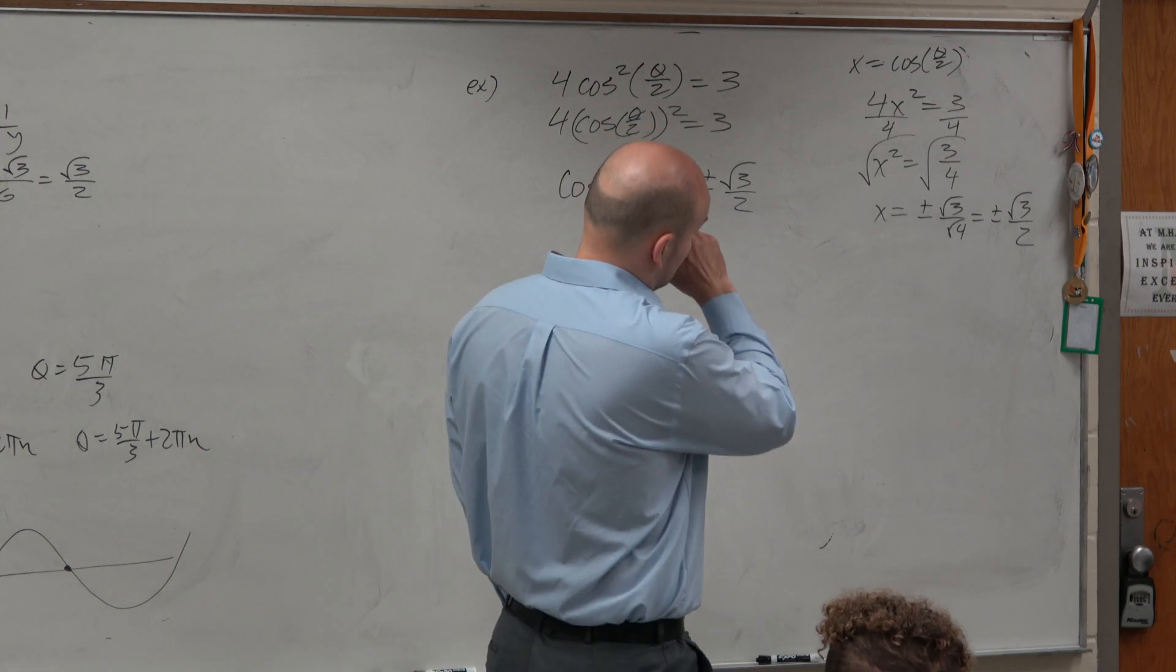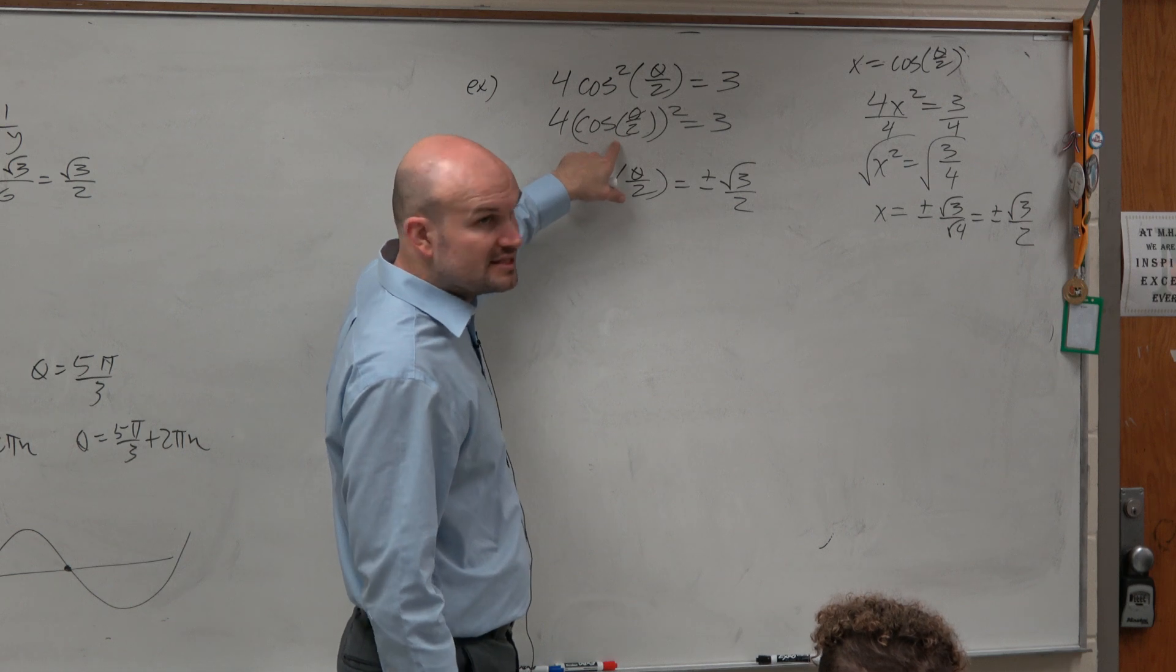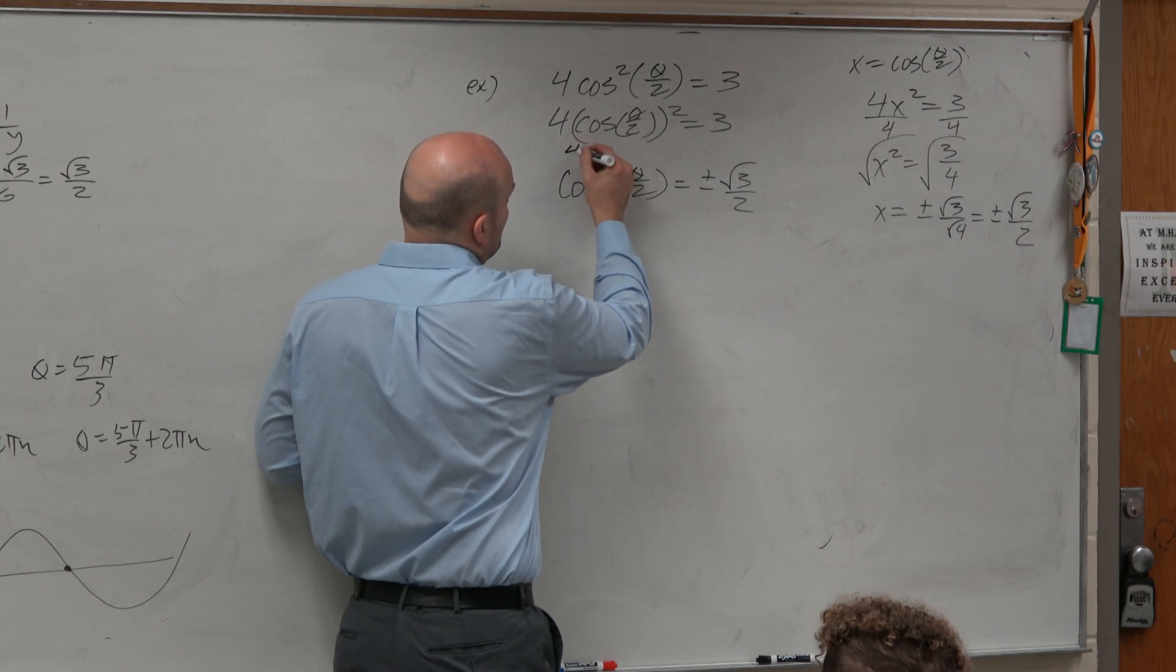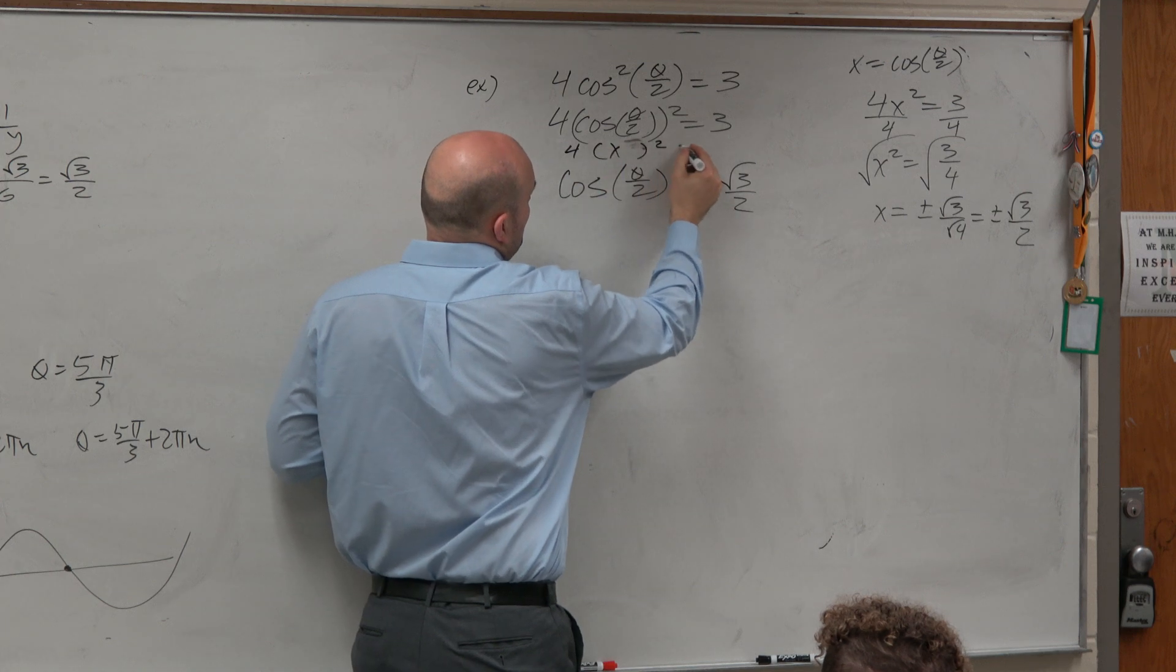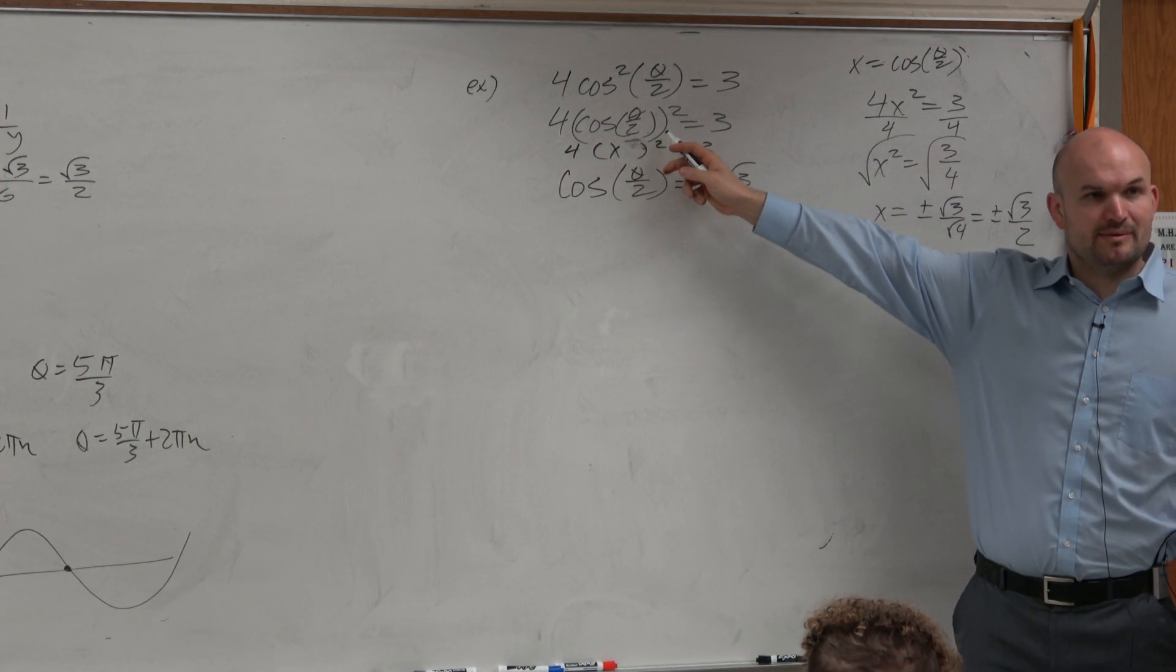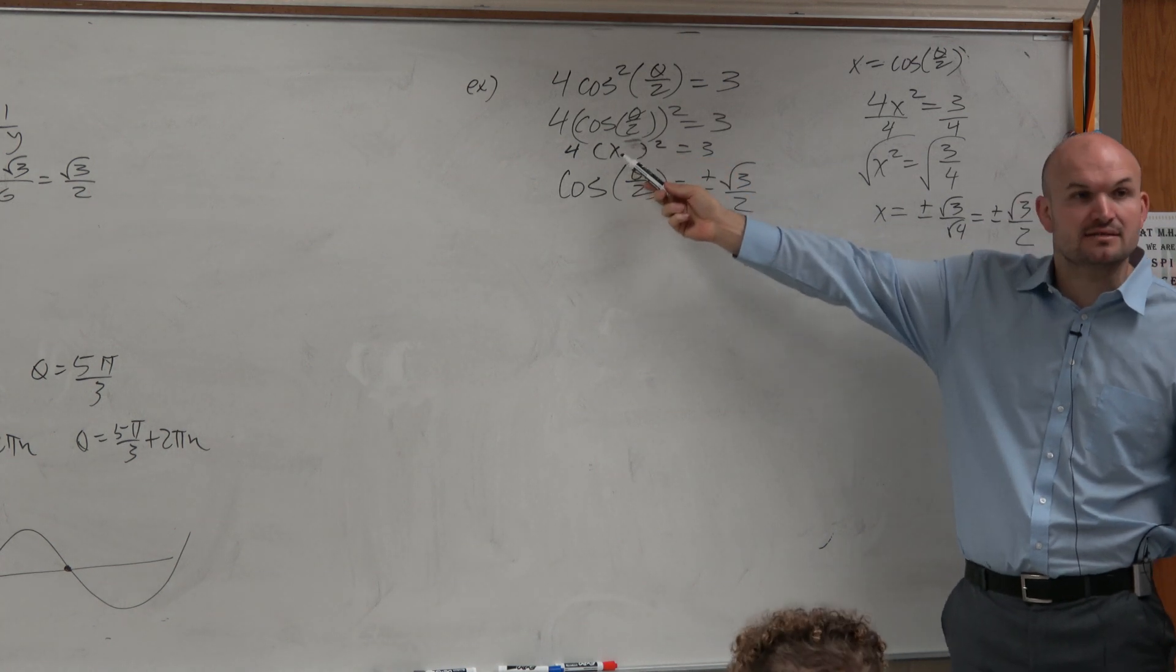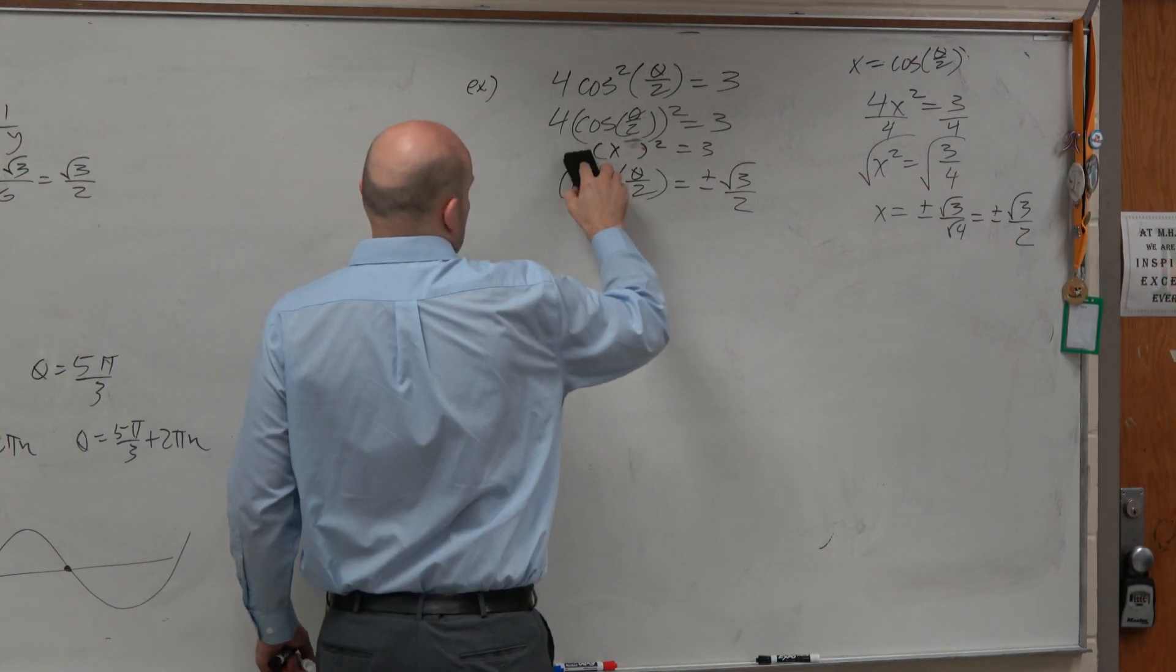Where did the 4 come from up there? We took x equals cos, and then that—this is x, this is x. 4 is not—4 was always there. It's 4x squared equals 3. x is cosine of theta divided by 2. The 4 was always there. I'm just saying, let x equal cosine of theta divided by 2, so I just replaced cosine with x, right?